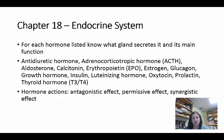Oxytocin's main function is to stimulate uterine contractions during labor and delivery and cause milk ejection or letdown during breastfeeding. It is produced by the hypothalamus and released by the posterior pituitary — made by the hypothalamus but released by the posterior pituitary. Prolactin is released by the anterior pituitary and stimulates the production and secretion of milk.